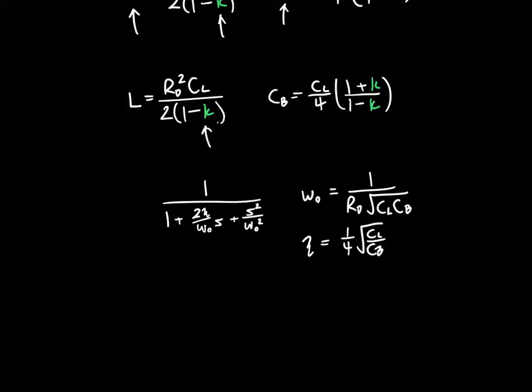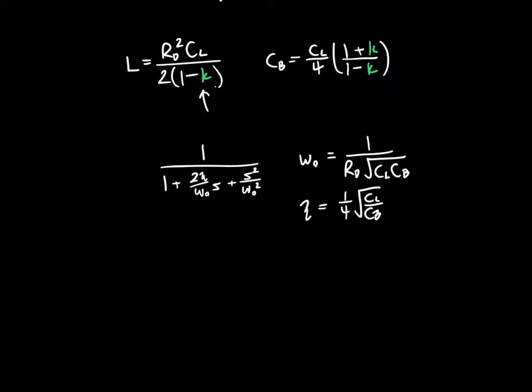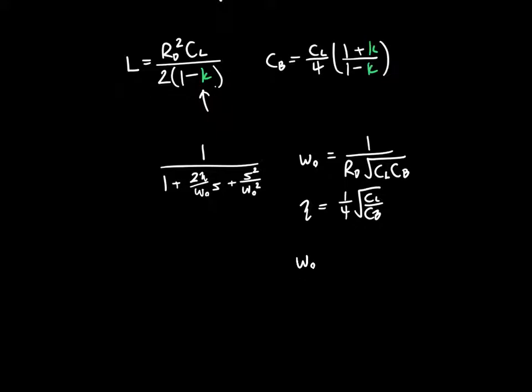But remember that we don't actually control any of these values anymore, because we've said that L and Cb are going to be fixed by K. So we can rewrite omega naught and zeta in terms of the things that we do control. Then we see that omega naught is equal to 2 over RdCl times the square root of (1 plus K) over (1 minus K), and zeta is equal to 1 half times the square root of (1 minus K) over (1 plus K).